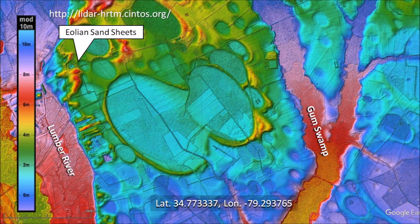There are some Aeolian sand sheets to the east of the Lumber River. Some sand sheets overlay the bays and some bays overlay the sand sheets. This indicates that there were strong winds associated with the creation of the Carolina Bays.